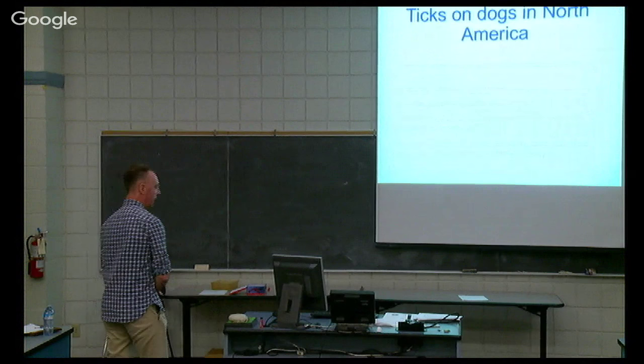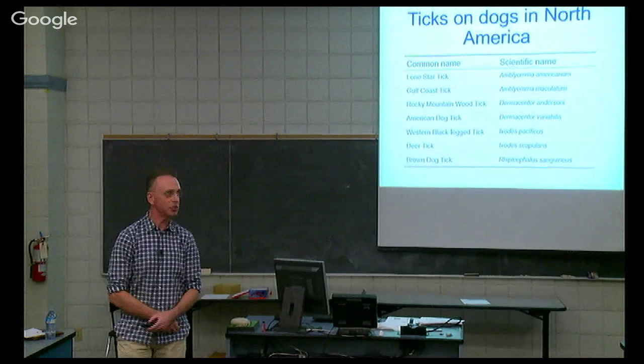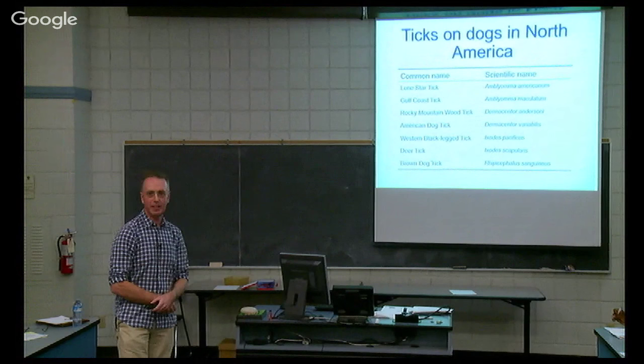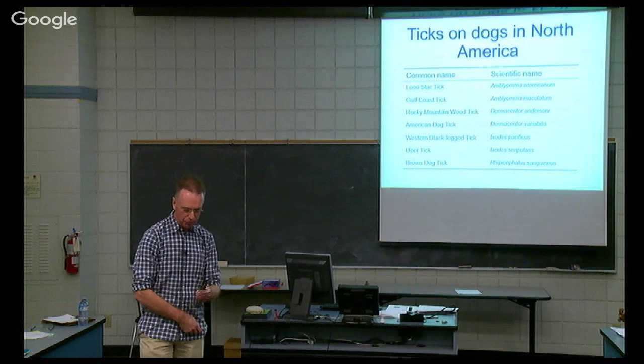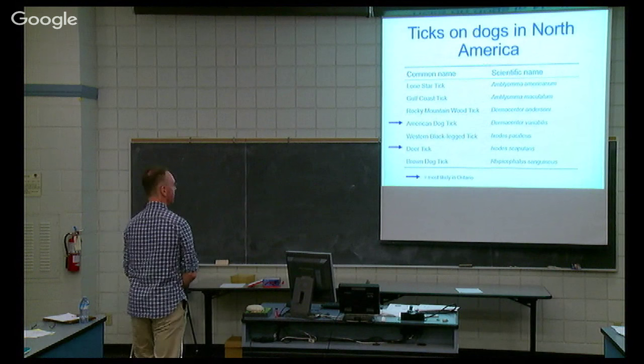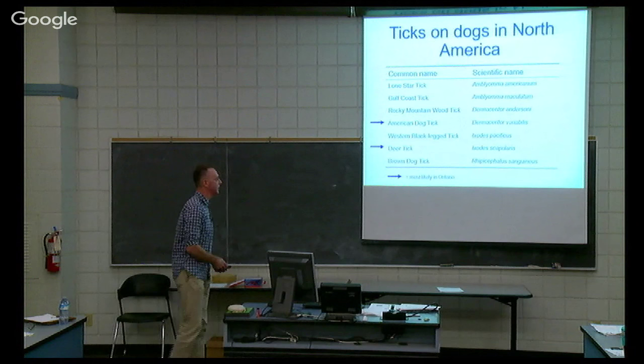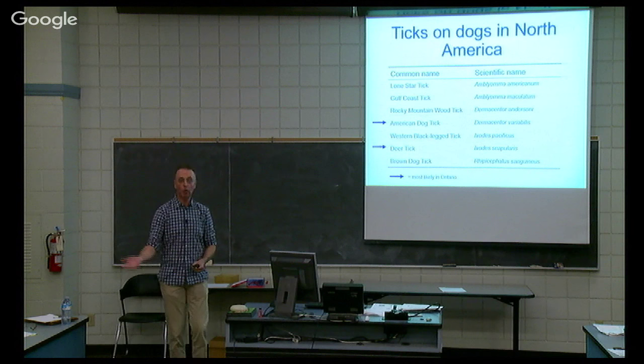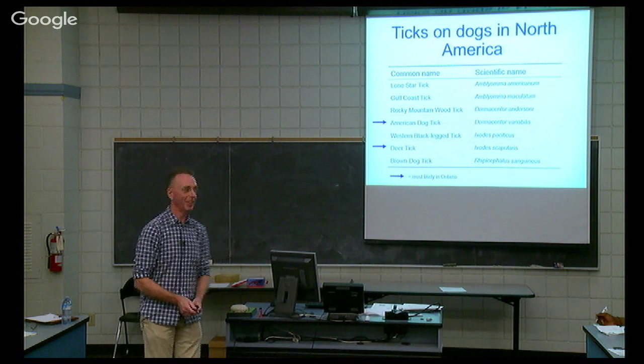If you read the textbooks, you get this frightening bit of information: that across North America on your dog, you could find any one of a large number of ticks. But here in Ontario, at the current time, essentially 99% of all ticks found on dogs that have not travelled are these two: the American dog tick, Dermacentor variabilis — which was the only tick in the province when I came to Ontario — and the deer tick, Ixodes scapularis.